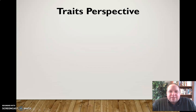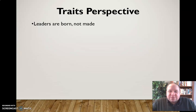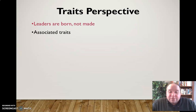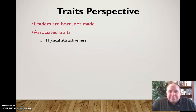One of the most historic views of leadership styles in small groups is what's called the traits perspective. This is the perspective that says that leaders are born and not made — that leaders are imbued with inherent characteristics at birth. Some of the associated traits include physical attractiveness; this perspective says that people are drawn toward leaders who are good-looking, and that will work in your favor in emerging as a leader.